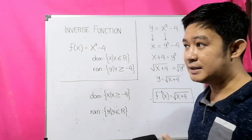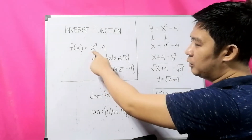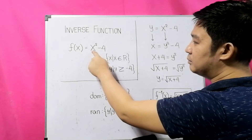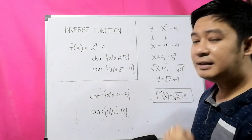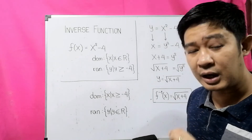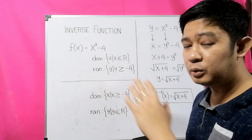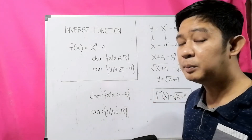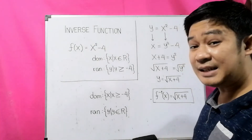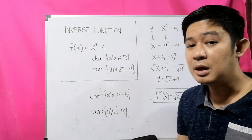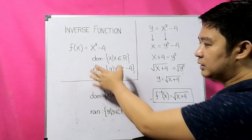For the range — all possible values of our function or y — if we use 0 as x, we get 0 squared minus 4, which is negative 4. That negative 4 is the least possible value for our function, because using any other value, whether going toward negative or positive infinity, gives a result greater than negative 4. So the range is y such that y is greater than or equal to negative 4.